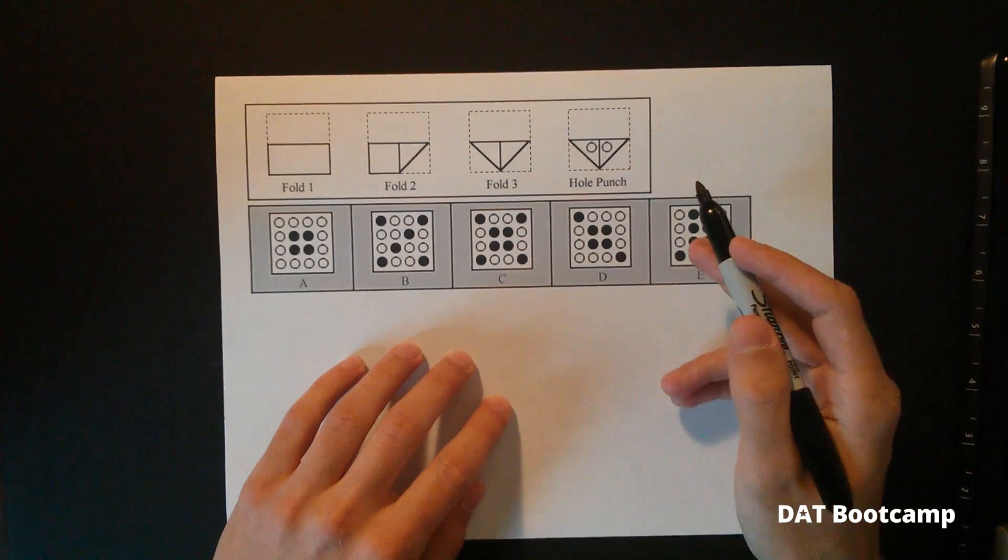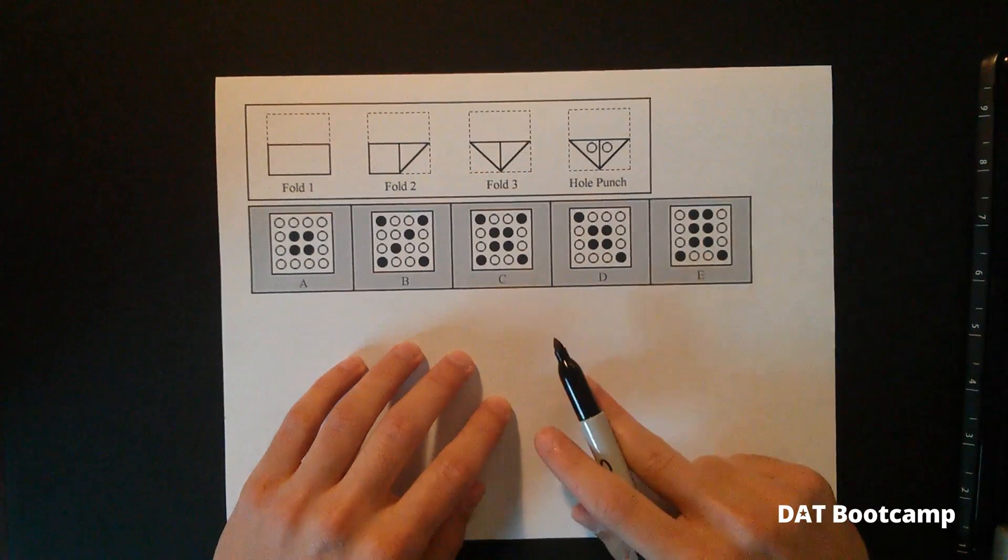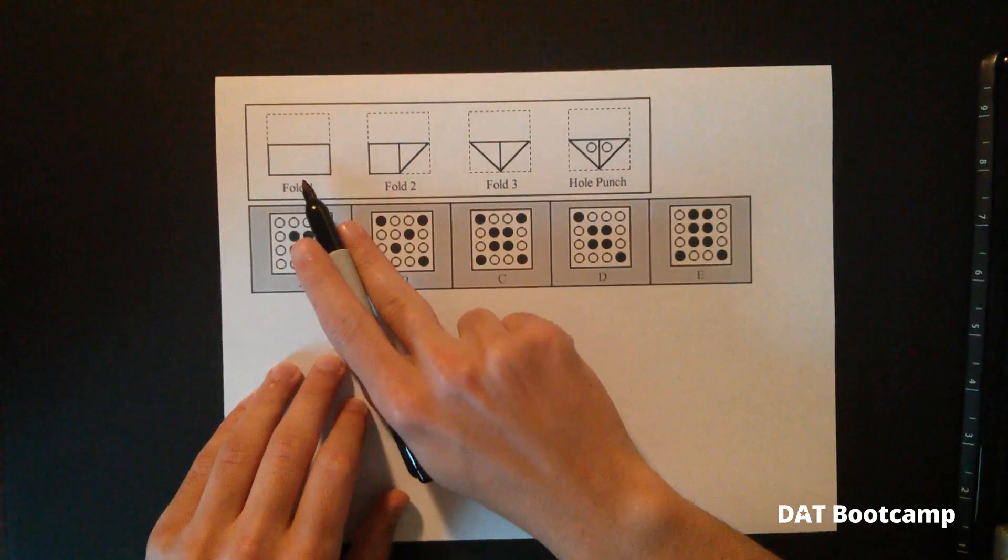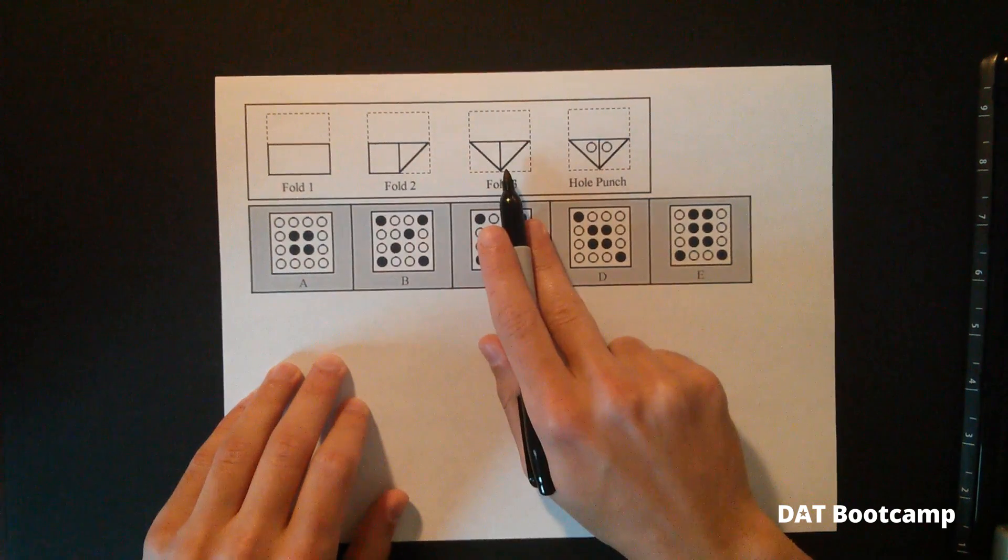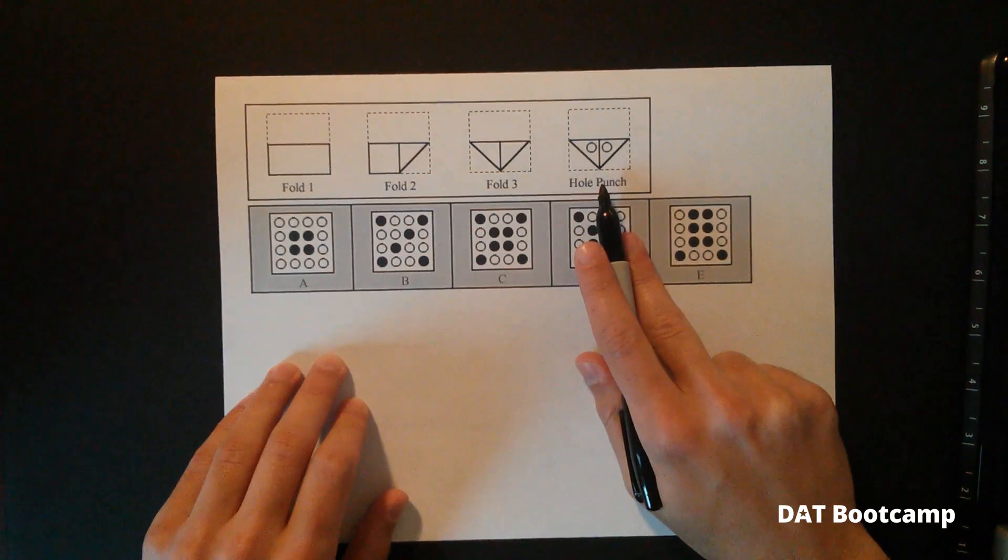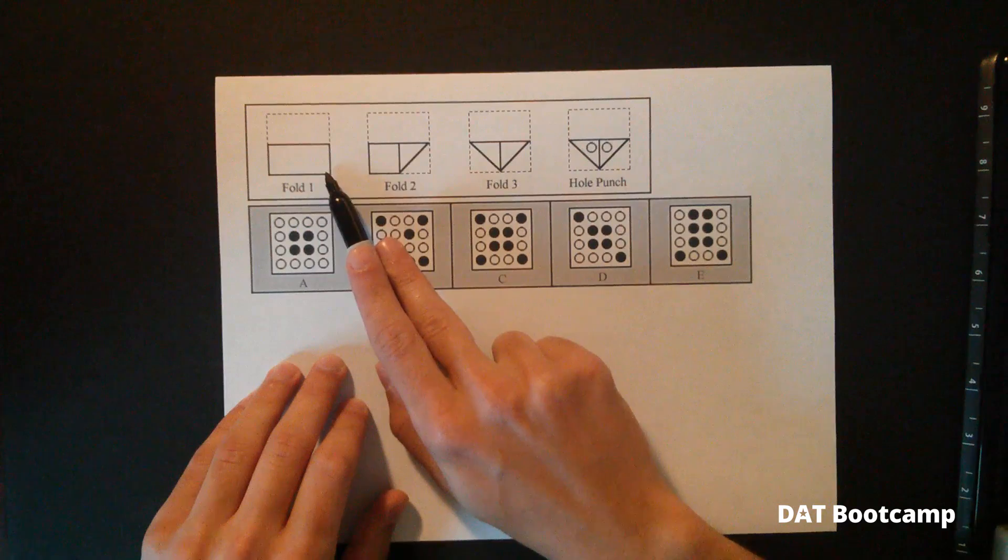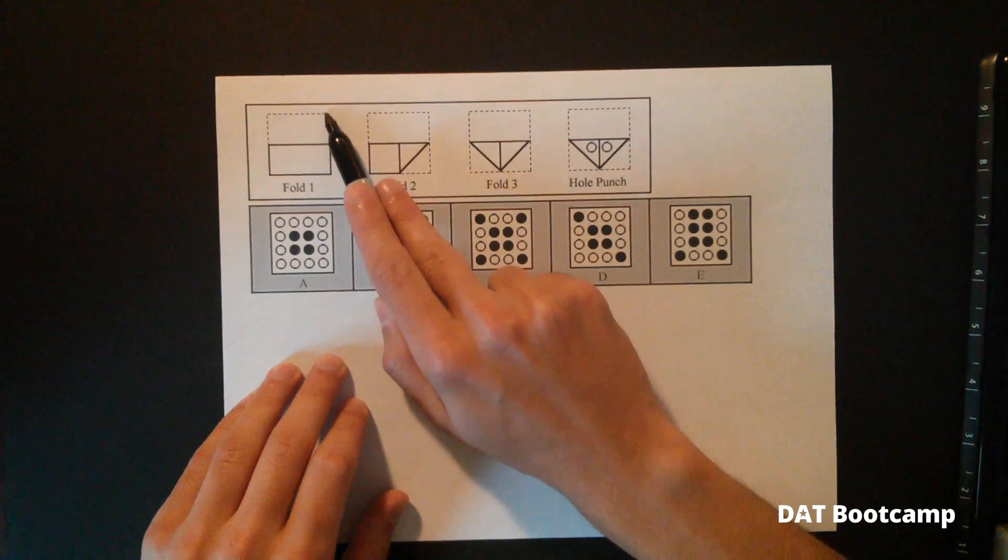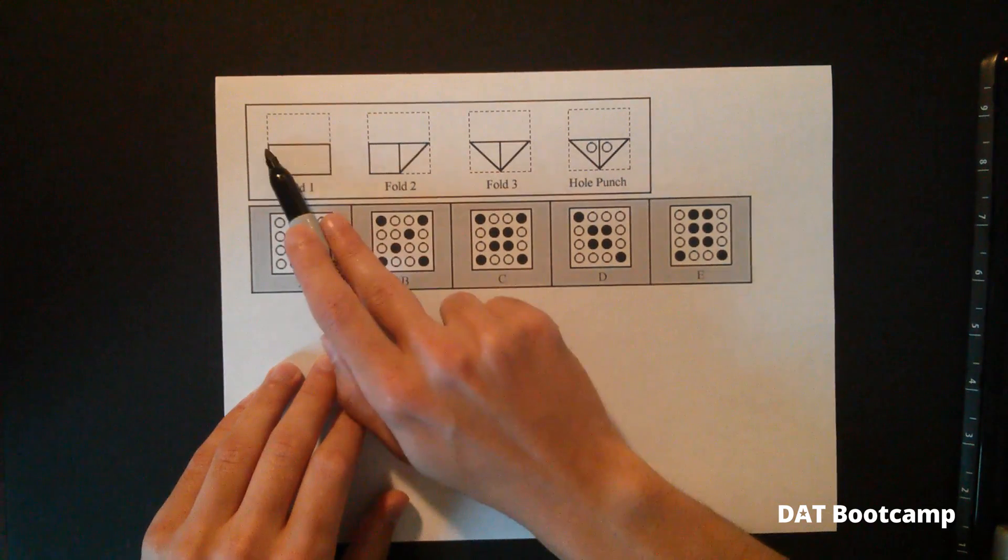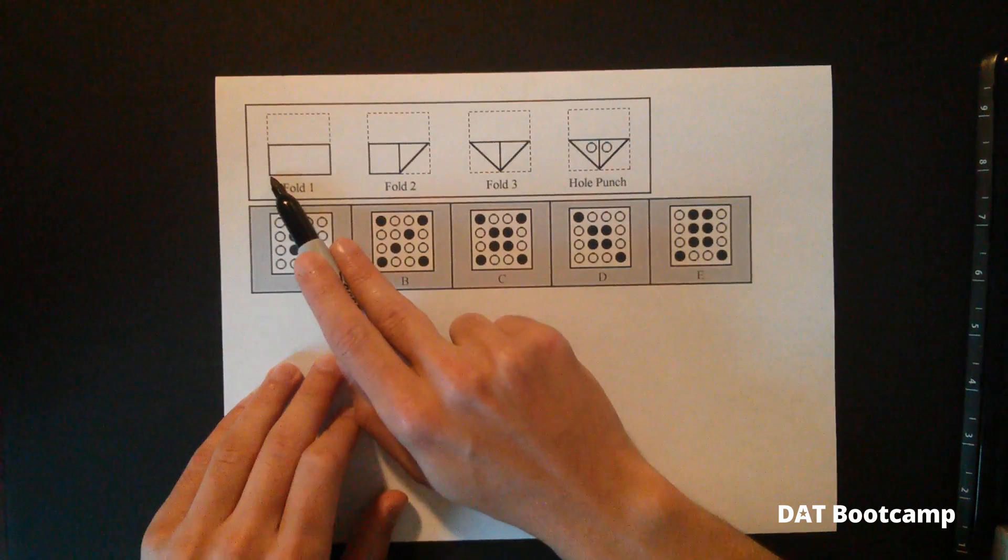So here's an actual problem that you would see on the DAT. You see that we have three folds, one, two, three, and a hole punch. The dotted lines represent where the paper originally was. The solid lines represent where the paper actually is now.